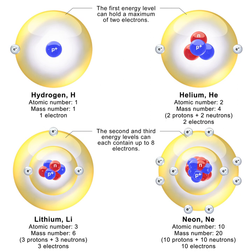A thermal neutron is a free neutron that is Boltzmann distributed with kT = 0.0253 eV at room temperature. This gives a characteristic speed of 2.2 kilometers per second. The name 'thermal' comes from their energy being that of the room temperature gas or material they are permeating. After a number of collisions with nuclei, neutrons arrive at this energy level, provided that they are not absorbed. In many substances, thermal neutron reactions show a much larger effective cross-section than reactions involving faster neutrons, and thermal neutrons can therefore be absorbed more readily by any atomic nuclei that they collide with, creating a heavier and often unstable isotope of the chemical element as a result.